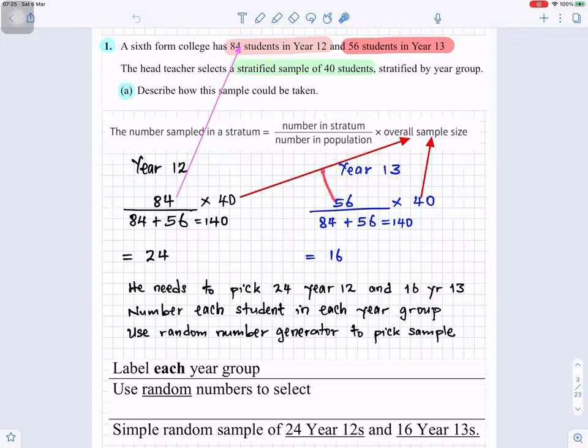The number in the stratum is 56 divided by the overall sample size. So the total number in the population is 140, and then the sample size is 40. So you put it in your calculator, it gives you 16. So we need 16 Year 13 students. So he needs to pick 24 Year 12 and 16 Year 13 students. And what are you going to do next?